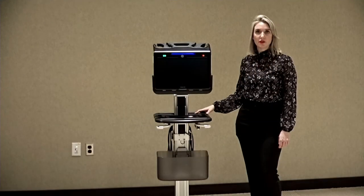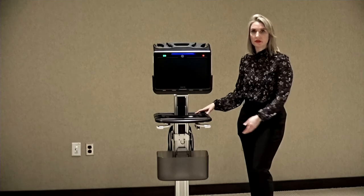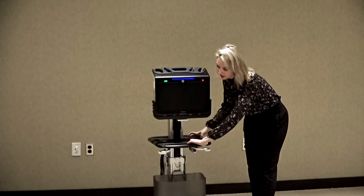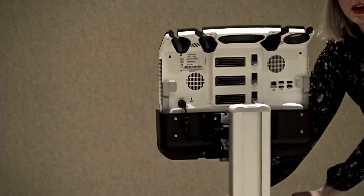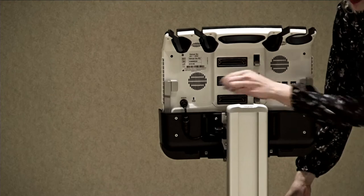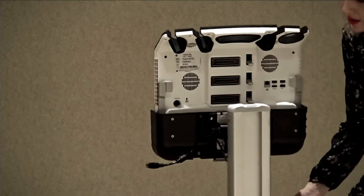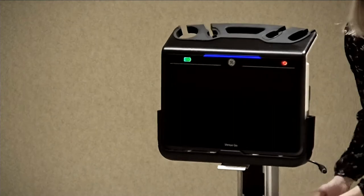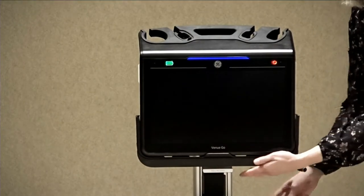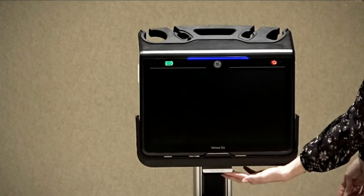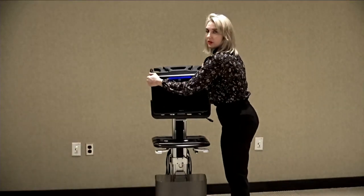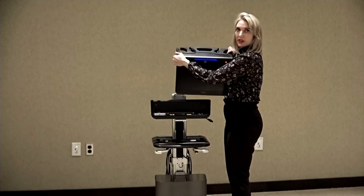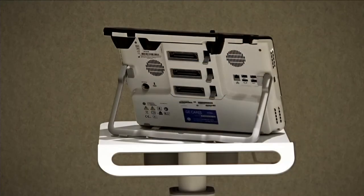To remove the Venue Go from the cart, lower the cart. Unplug the power cord from the back. Pull the release mechanism. Pull one side of the monitor, then the other, until the Venue Go is released. It can then be placed on a flat surface using the kickstand in the back.